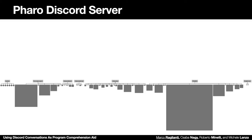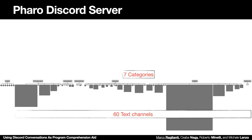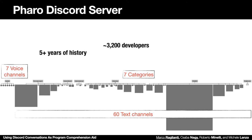We use as a case study the FireDiscord server. It consists of 7 categories, 60 text channels, 7 voice channels. It has 5 years of history, 3,000 developers, half of them are active message authors, and a total of about 200,000 messages.